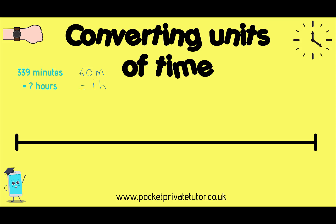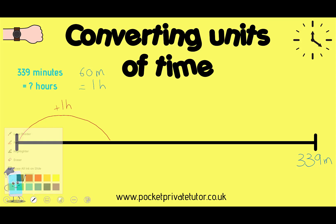What I would do here is use a number line. I'm going to write 339 minutes at the end, and think about how many hours are within those minutes. I'll do a jump of one hour and think about how many minutes are in that hour — one hour is 60 minutes, as I've already written at the top.